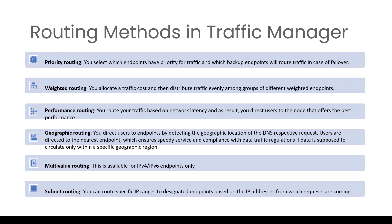In case of multi-value routing, if you have IPv4 and IPv6 addresses, we select multi-value as the routing method. Whenever a request is received for this profile, all healthy endpoints will be returned. The last one is subnet routing — certain sets of IP addresses or designated endpoints are assigned to one application and traffic from those IP addresses will always go to that particular application.